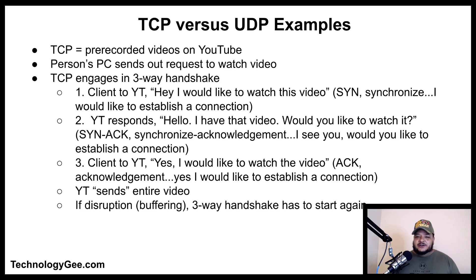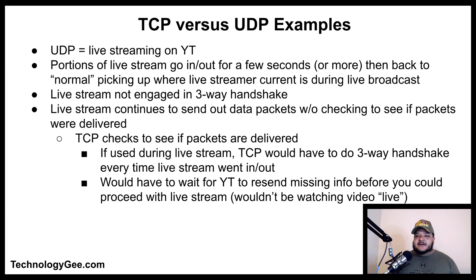An example of UDP would be the live streaming of a video on YouTube. A YouTuber is live streaming on their channel and you decide to tune in. During the live stream, portions go in and out for a few seconds at a time and then things go back to normal, picking up where the live streamer currently is. With UDP, the live stream is not engaging in a three-way handshake to ensure you received all missing parts of the video — it just continues to send out data packets without checking to see if you received them.